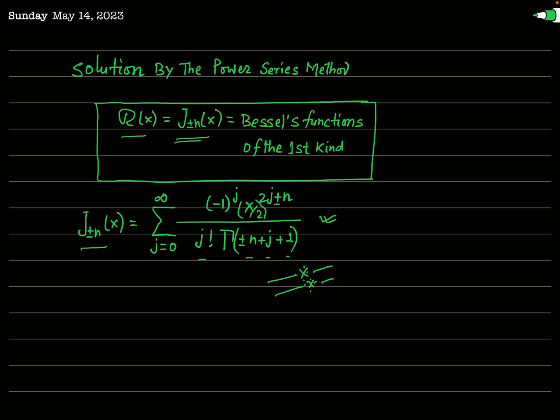When the positive sign is taken, the plus sign is used throughout the right-hand side; when n is taken as negative, the minus sign is used. This completes the definition of Bessel's function of the first kind.